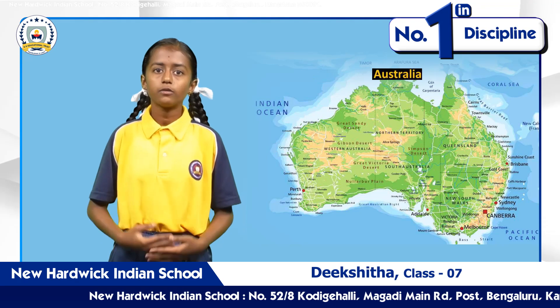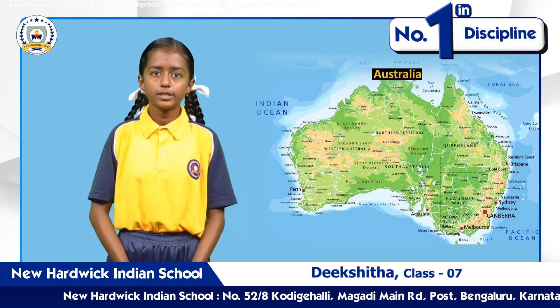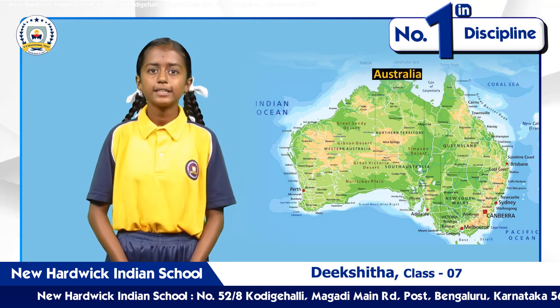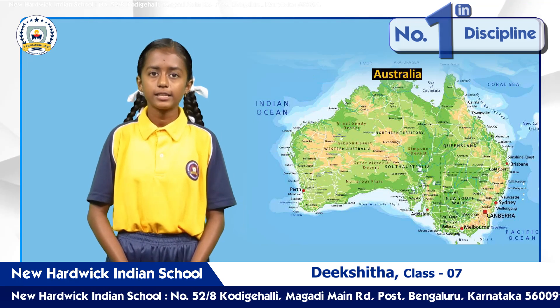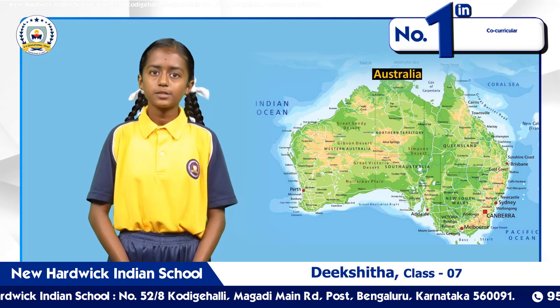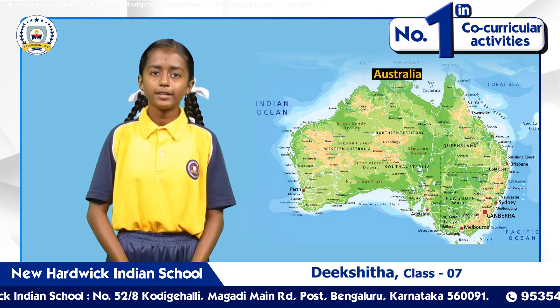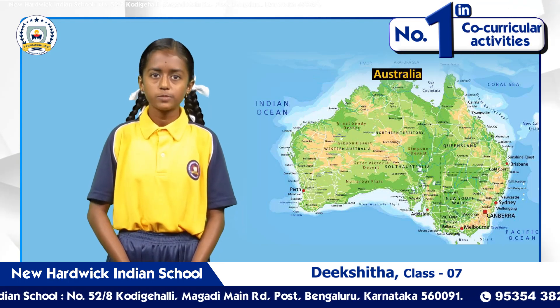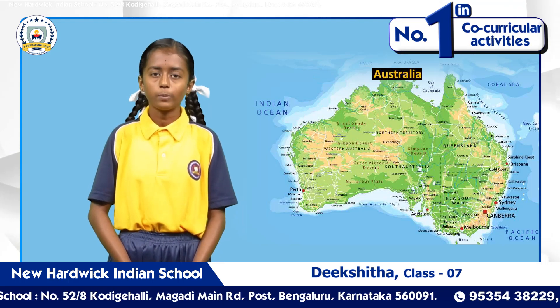The continent of Australia is situated completely in the southern and eastern hemisphere. Australia is the smallest continent both in terms of area and population.